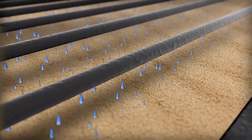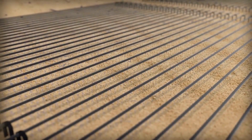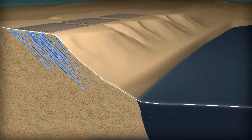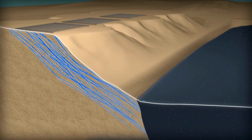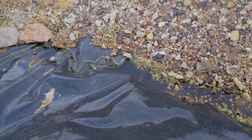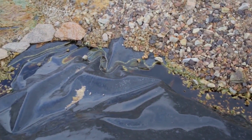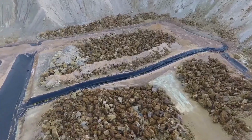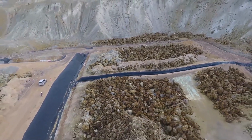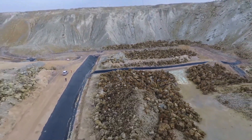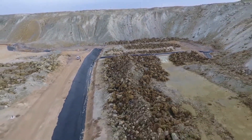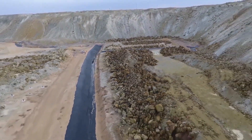First, a weak leaching agent is distributed evenly over the top of the waste dumps through an extensive network of dripper pipes. Copper within the rock is leached out by the solution that slowly drains through the dump until it reaches the natural ground level, and then flows out from under the dump following the natural bedrock gradient into a thick plastic-lined collector trench which runs along the edge of the dumps.